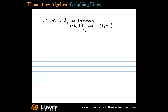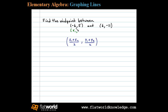To calculate the midpoint between any two ordered pairs, we can use the midpoint formula. The midpoint is an ordered pair where the x-coordinate is the average of the given x values, and the y-coordinate is the average of the given y values. In this case, x1 is negative 6, y1 is 5, x2 is 6, and y2 is negative 11.